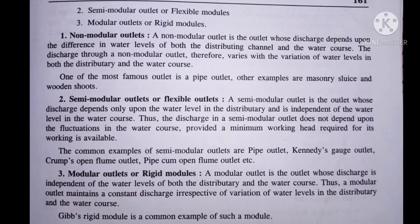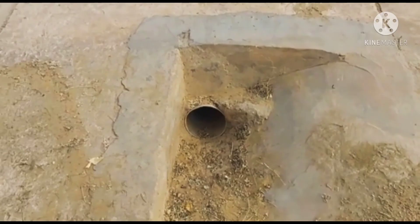So ye thi requirements. Ab dekhte hain types of outlets. So there are three types of outlet: first one is non-modular outlet, second is semi-modular outlet (flexible modules), and third one is modular outlet (rigid modules). Ye jo picture aapko show ho rahi hai, ye outlet pipe ki picture hai — yahan se jo paani niklega, woh irrigation ke liye use karenge, aur isme paani canal se aa raha hai.